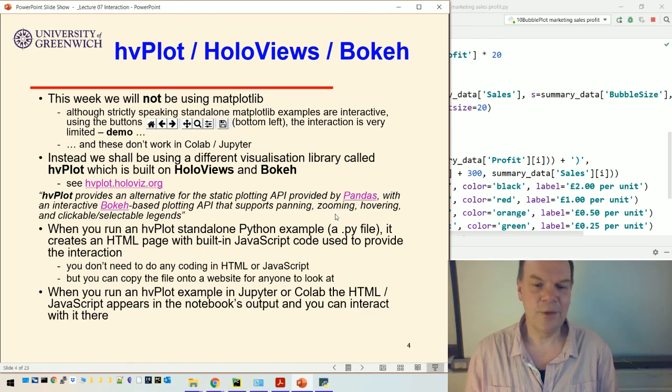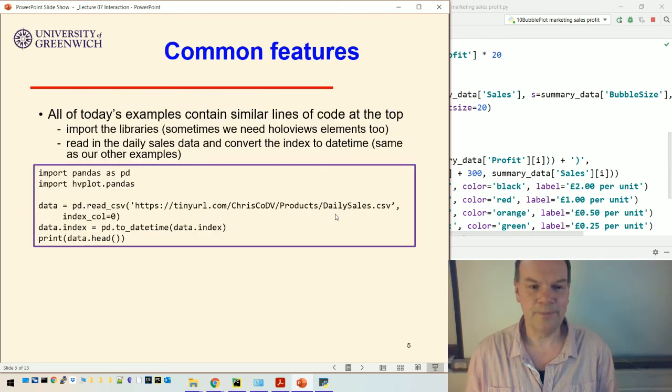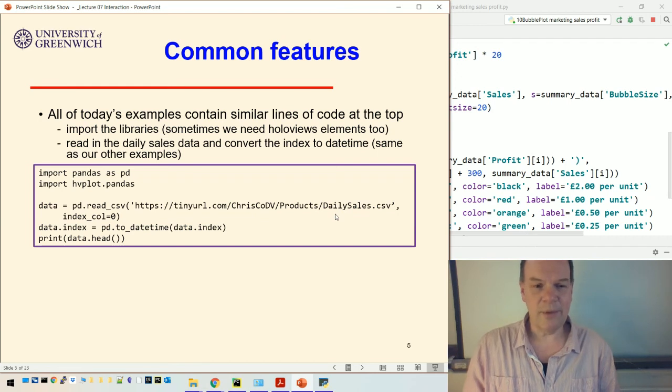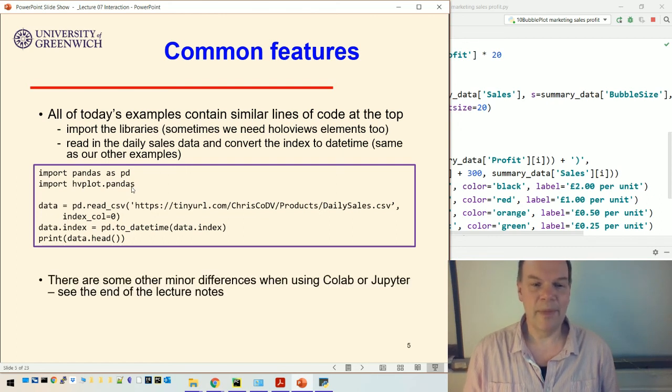If you do this in Jupyter or Colab, we can embed this into the notebook, so it'll appear there. It's using these same technologies - HTML and JavaScript - to provide the interactivity. In terms of the code, all of the examples today will contain similar lines of code at the top. This is very similar to what we've seen before. In fact, reading in the data is exactly the same. However, you'll notice there's a line here that's different, so we're importing hvplot.pandas rather than importing matplotlib. There's some minor differences we'll need when using Jupyter or Colab, and I put those on a slide right at the end of the lecture.